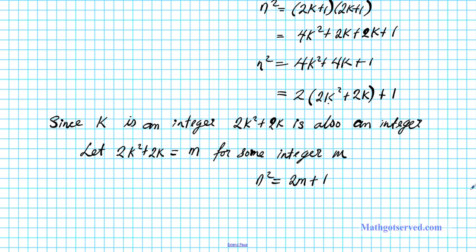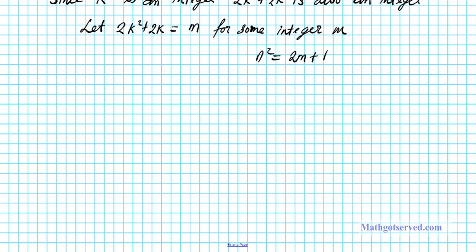And by definition, if you have 2 times an integer plus 1, whatever is equal to that must be odd. So by definition, n squared is odd. That basically concludes our proof.